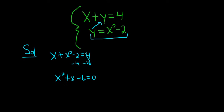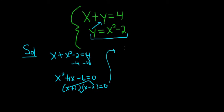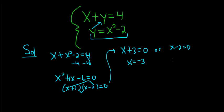This should factor. We need two numbers that multiply to negative 6 and add to 1. I think positive 3 and negative 2 should work, because 3x minus 2x is 1x, and 3 times negative 2 is negative 6. We have a product equal to 0, so we can set each factor equal to 0. So x plus 3 equals 0, or x minus 2 equals 0, giving us x equals negative 3 or x equals 2.